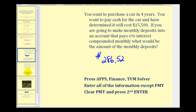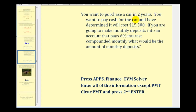For our second example, we're going to look at the exact same situation except change the number of years to two years instead of four years. We'll be able to determine if we only save for two years, how much more we would have to save on a monthly basis.